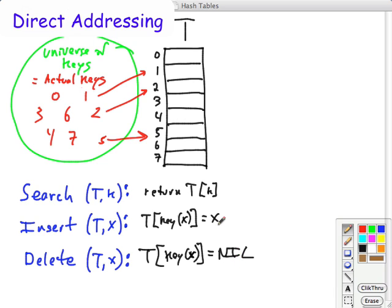Of course the problem with this is that if the number of possible keys in the universe of keys is much larger than the size of the table that we want to allocate, and we're going to use just a small subset of this universe of keys, then we're wasting space.